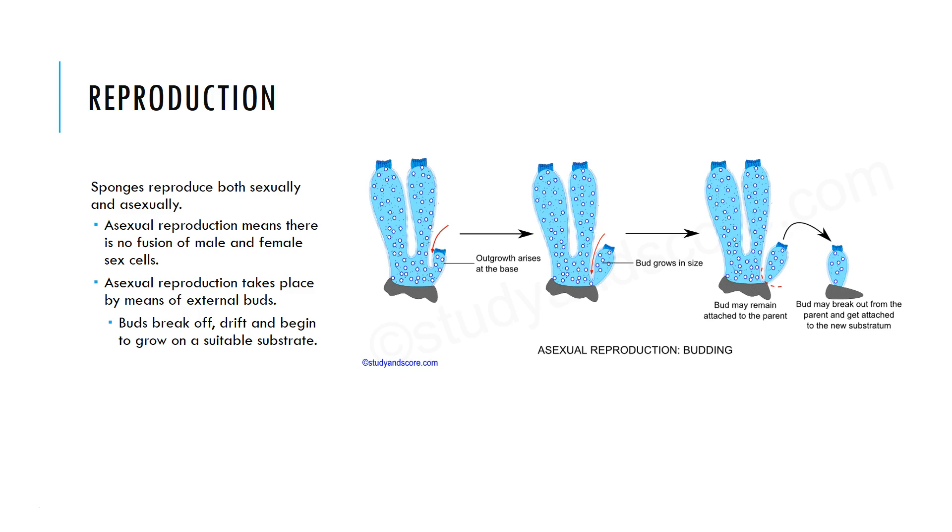Sponges reproduce both sexually and asexually. Sexual reproduction is when there is a male and a female cell that fuse together to create a completely new organism. The male cell would be a sperm and the female cell would be the egg. Sexual reproduction is what we are probably more familiar with.